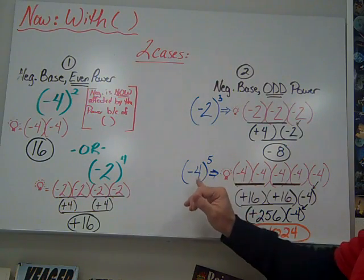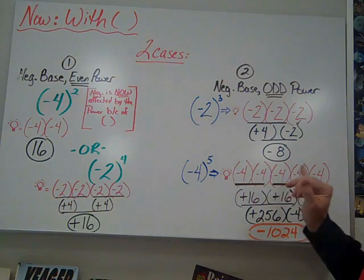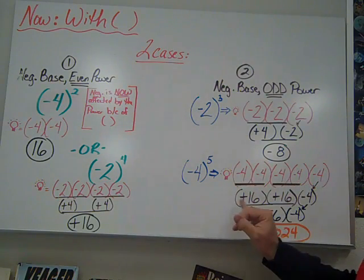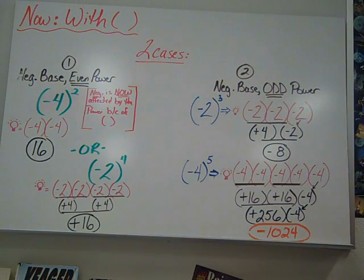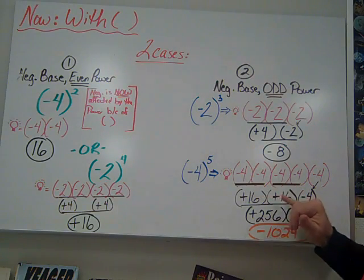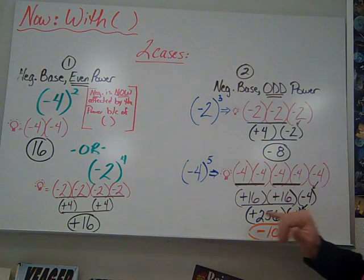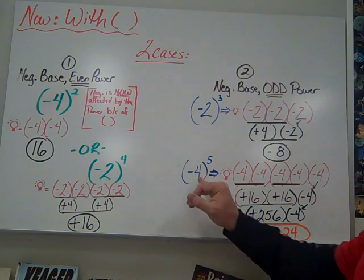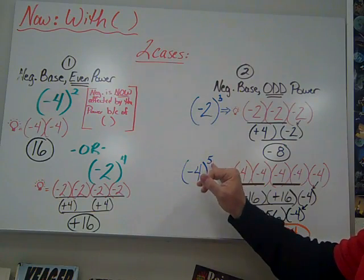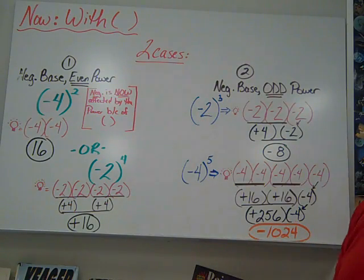Negative four to the fifth. Again, a negative base to an odd power. You're going to think of it as five negative fours. Left to right gives us 16. 16 and our negative four. 16 times 16 is 256. Negative four comes down. I have different signs. So I have a negative 1024. So when I have a negative base to an odd power, I get a negative answer.